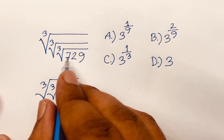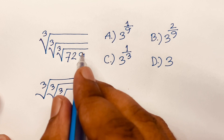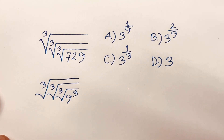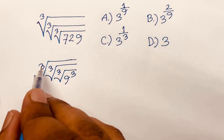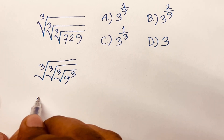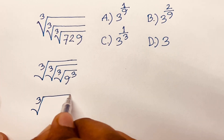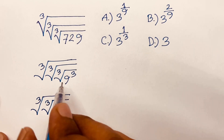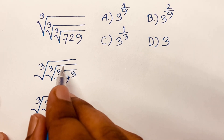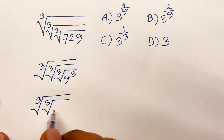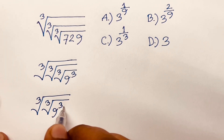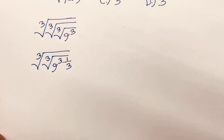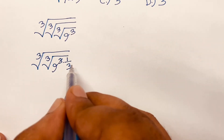729 is equal to 9 power 3, so the innermost 3 square root of 9 power 3 becomes 9 power 3 times 1 over 3, and the 3s cancel. So we're left with 3 square root of 3 square root of 9.